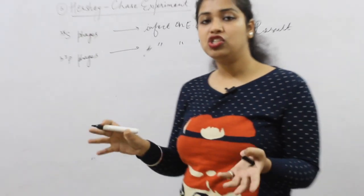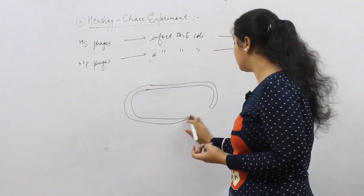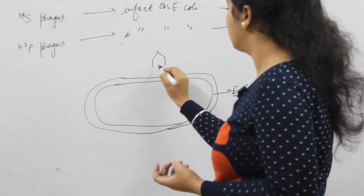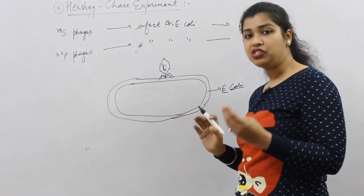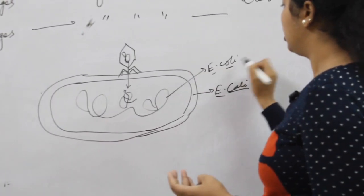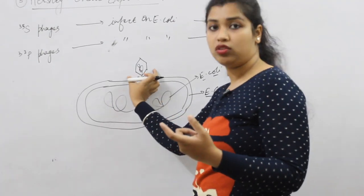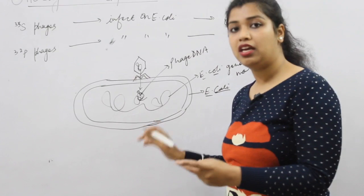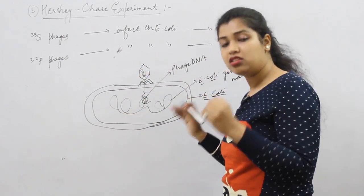Let me explain how phages infect bacteria with a diagram. Suppose this is an E. coli cell and a phage comes and sits on the bacteria. The phage sits on the cell and injects — that is, inserts — its genetic material (phage DNA) inside the bacterial cell. The protein coat remains outside. This is how infection is caused by phages.